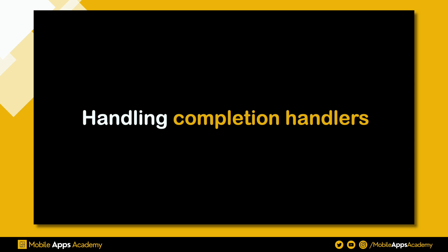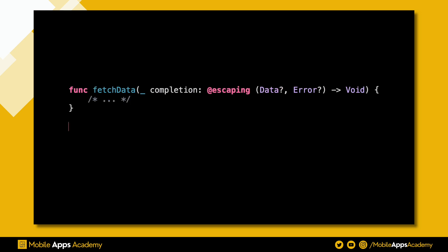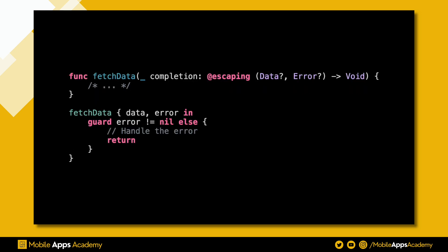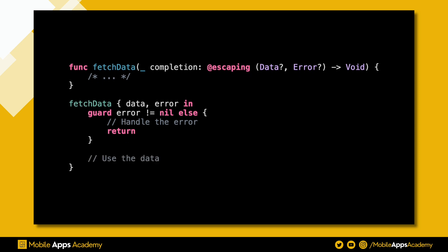When handling asynchronous tasks in Swift, you often need to manage success and error states. Here is how you use optionals in a completion handler. In this approach, you check if error is nil and handle it. If there is no error, you safely unwrap the data.